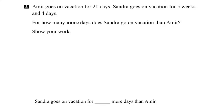In this question, we're told that Amir and Sandra go on vacation. Amir goes on vacation for 21 days and Sandra goes on vacation for 5 weeks and 4 days. What we want to find out is how many more days Sandra is on vacation than Amir.